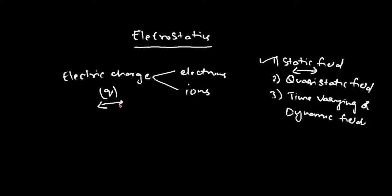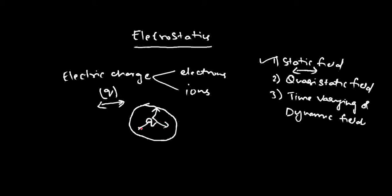If this charge doesn't vary from time to time, if the position of the charge is fixed, then the field produced by this charge would be a static field. So at time T equal to T1, if the position of charge Q is R1, and at time T equal to T2, if it is still the same position R1, then the field produced by this charge in its vicinity can be considered as static field. It is a field produced by electric charges which are at rest. So electrostatics can be defined as the study of the field produced by electric charges at rest.